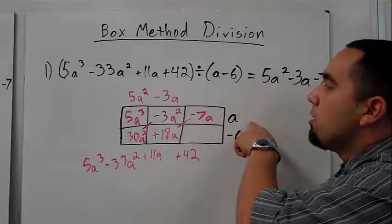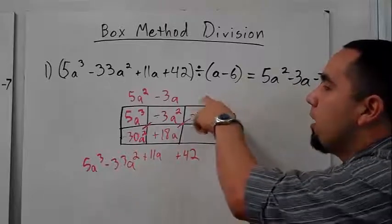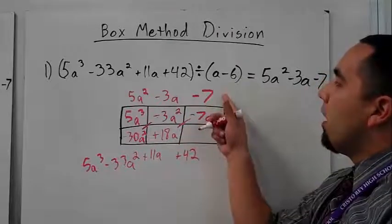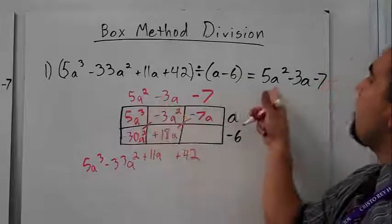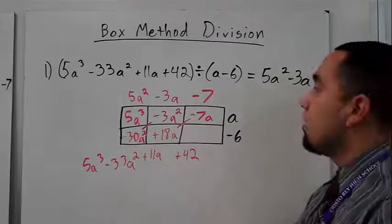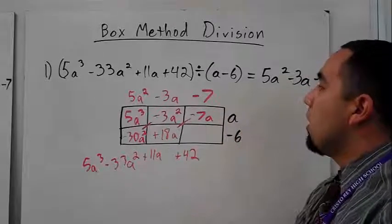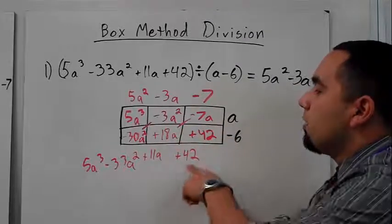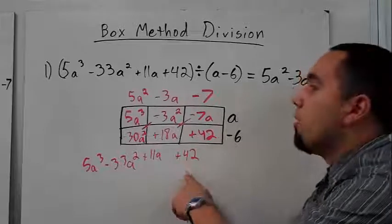Now I can figure out this outside box, or outside the box. So this is going to be negative 7. And if you can see, I already have my answer. But let's just fill it out and make sure it works. So negative 7 times negative 6 is a positive 42. And of course, that last box is always this number right here.